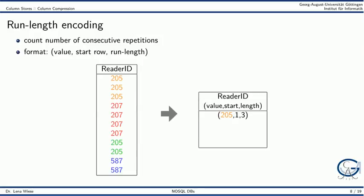Let's look at the reader ID column as an example. The first value is 205; it starts in row 1 and is repeated 3 times. The second value is 207; it starts at row 4 and is repeated 4 times. The third value is 205; it starts in row 8 and is repeated twice. The last value is 587; it starts in row 10 and is also repeated twice.